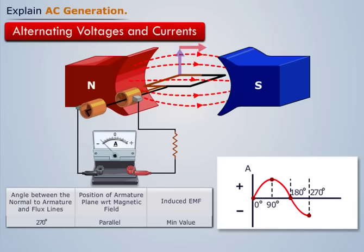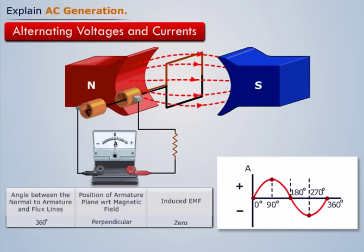Now as the armature continues to make the turn, negative voltage decreases as the armature again cuts the flux lines at smaller and smaller angles. And when the rotation completes one full cycle at 360 degrees, no flux lines are cut and zero voltage is induced in the armature.